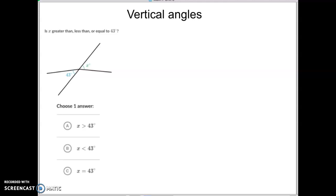Remember, vertical angles are when you have two straight lines. They are the two angles that are opposite of each other. One's on one side, one's on the other side.